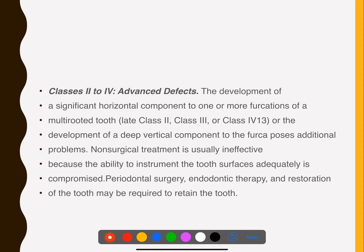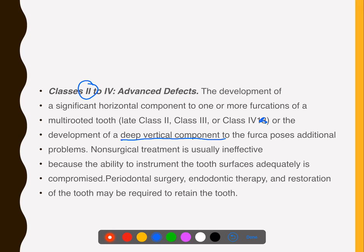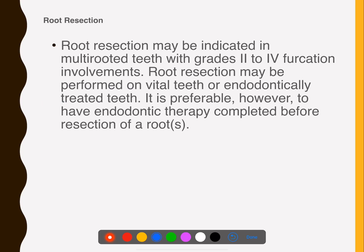For Grade 2 to Grade 4 advanced defects, you either regenerate in Grade 2 cases when there is a long, holding defect with a deep vertical component, or you perform resective procedures involving root resection or hemisection.